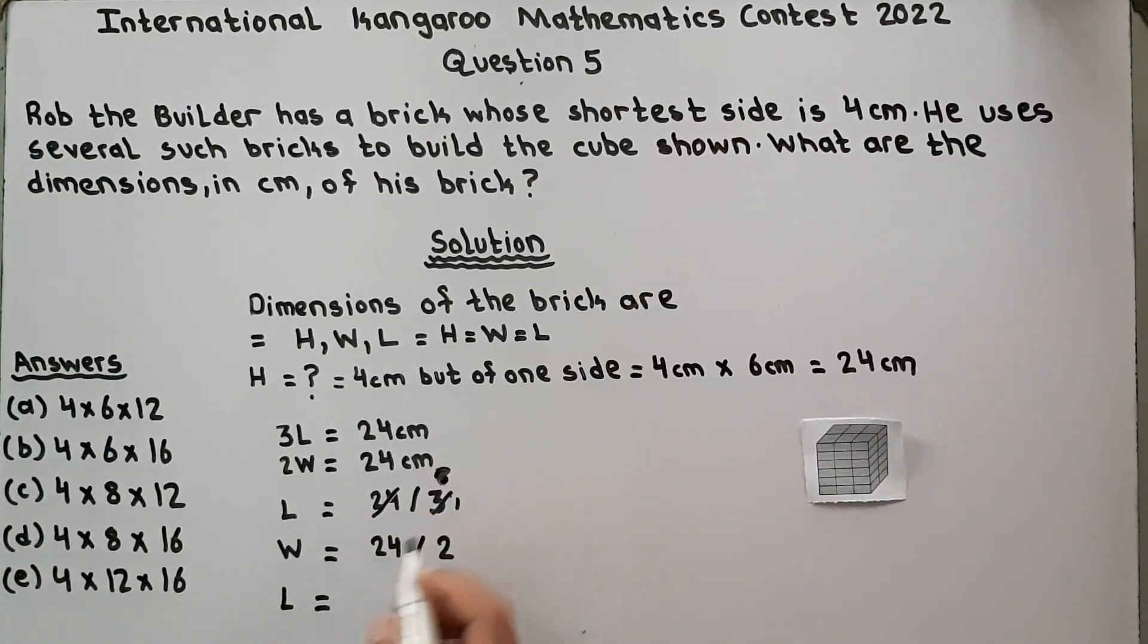L is equal to 24 divided by 3, so length is equal to 8. And width is equal to 24 divided by 2, which equals 12.